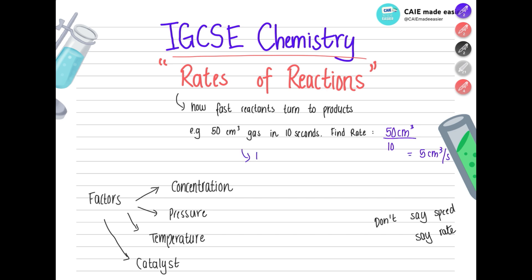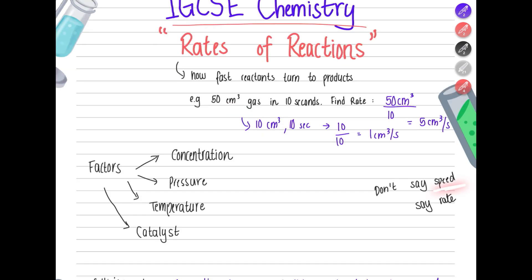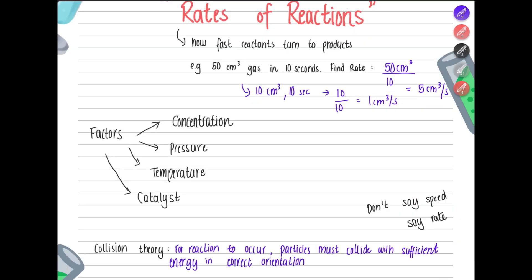If you only get 10 cm³ in 10 seconds, the rate would be 10 divided by 10, which equals 1 cm³ per second. A higher rate means less time is taken to get a larger amount of product. We don't say the speed is high — we use the term 'rate of reaction'. Units of rate can be grams per second, centimetres per second, or moles per second — all divided by time.